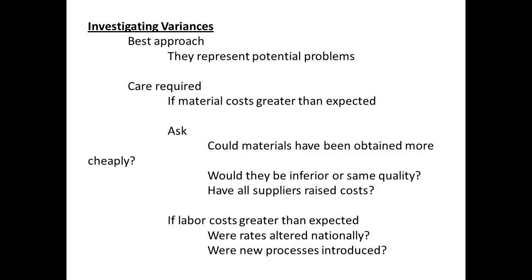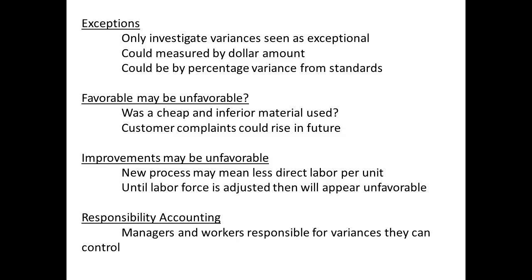Once a managerial accountant has the figures for variances, care is needed in analysis. The best approach is to first take the view that they may show potential problems. If material costs are greater than expected, then it is important to determine whether material of the same quality could have been obtained more cheaply, or whether all the suppliers have raised their costs. If labour costs were greater than expected, then it is necessary to see if any new working practices are being introduced, or whether there was a change in rate due to an agreement with the union, or a government change in wage rate, particularly where minimum wage is concerned. Managers will usually determine which variances to examine. Often, only those that are seen as exceptional will be investigated further, whether because of dollar amount differences or because of the percentage variance from standard costs.